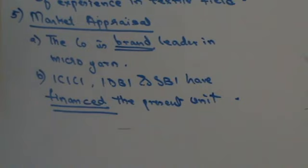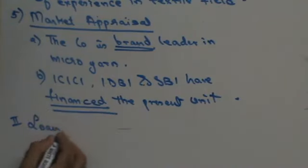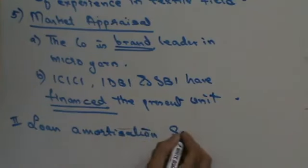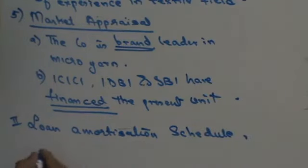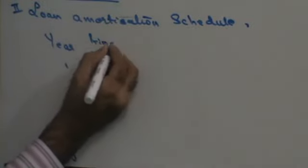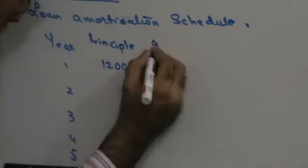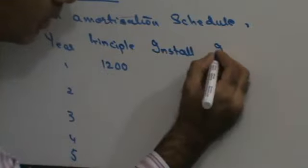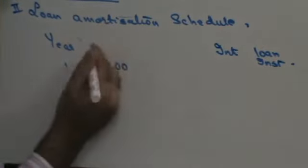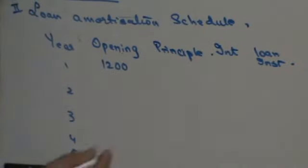Next, we make a loan amortization schedule, because the loan must be repaid in five years. The columns are: opening balance, principal, interest, loan installment, and closing balance. The loan taken is 1200 lakhs over 5 years, so the principal repayment each year is 1200 ÷ 5 = 240 lakhs. Interest is 13% on the opening balance.